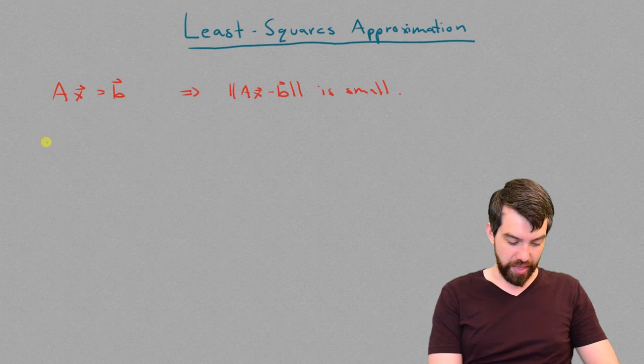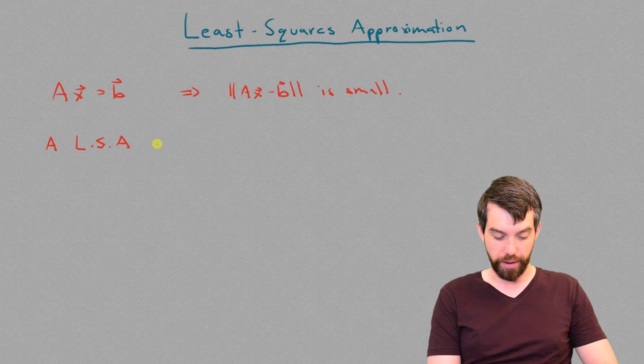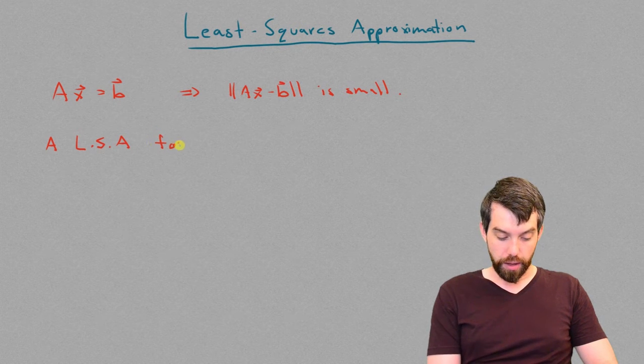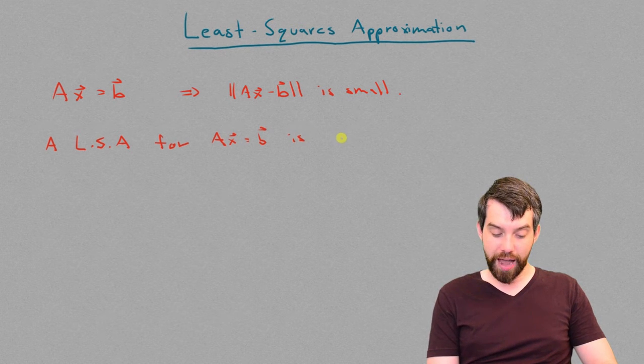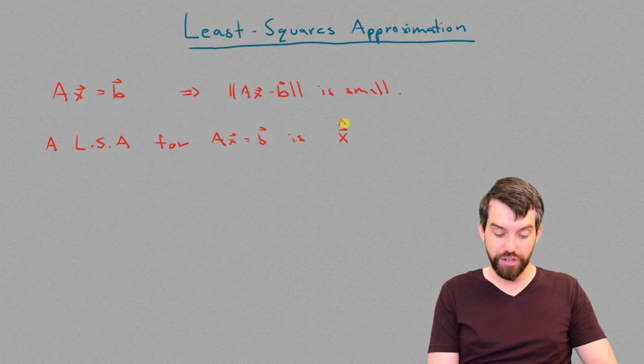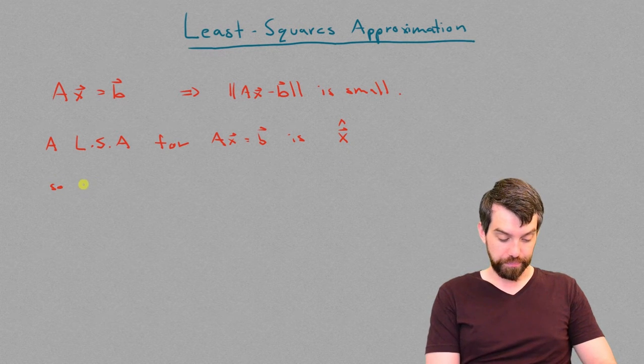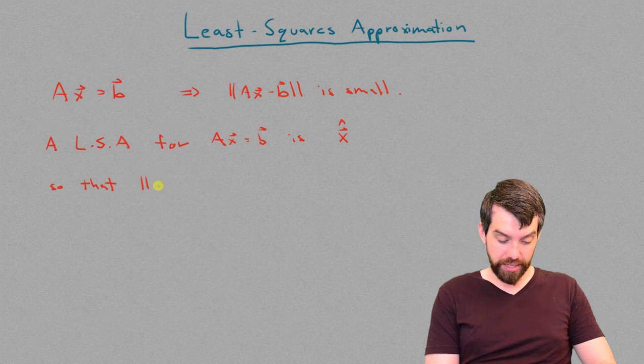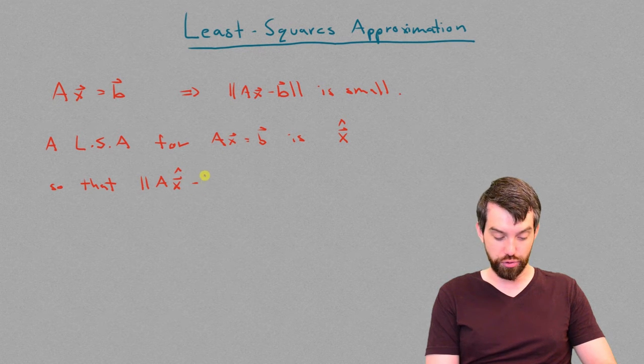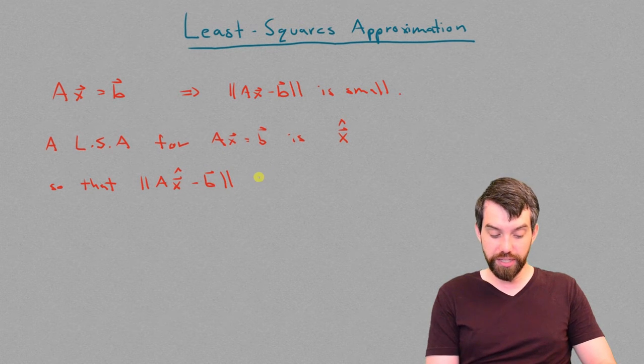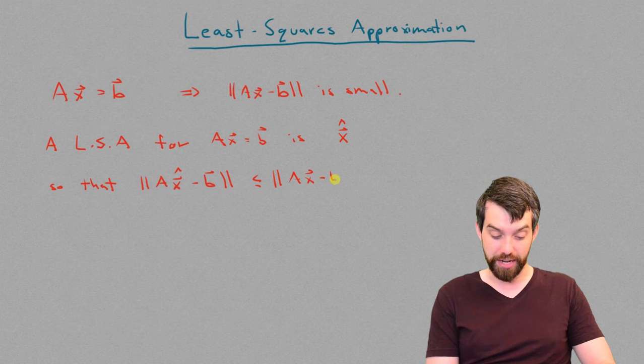So a formal way of saying this is that a least squares approximation for ax equal to b is some vector, and I call it x vector hat, and I put a little hat on it, so that the distance when I take ax and I put the vector hat on it and I subtract it from b, that this is smaller than any other ax minus b.